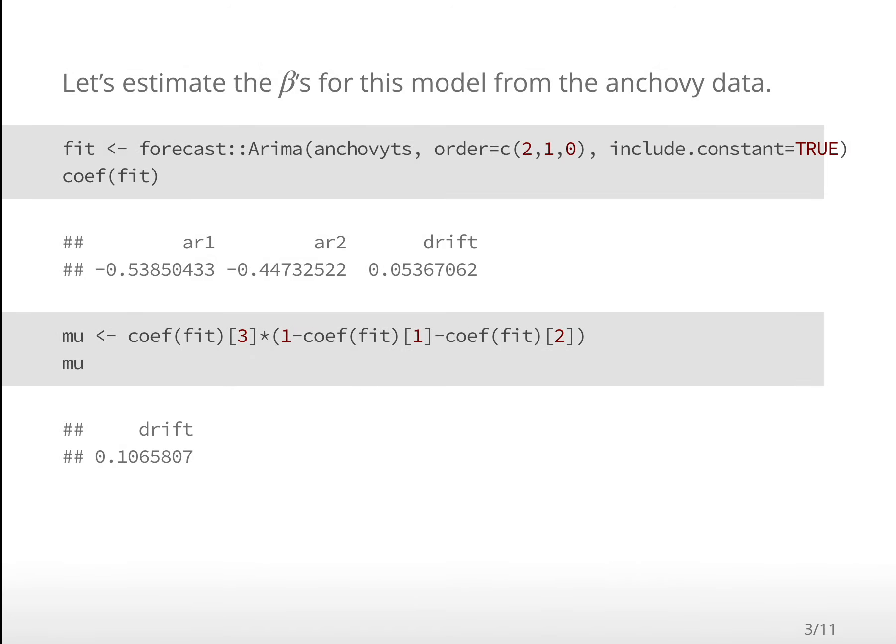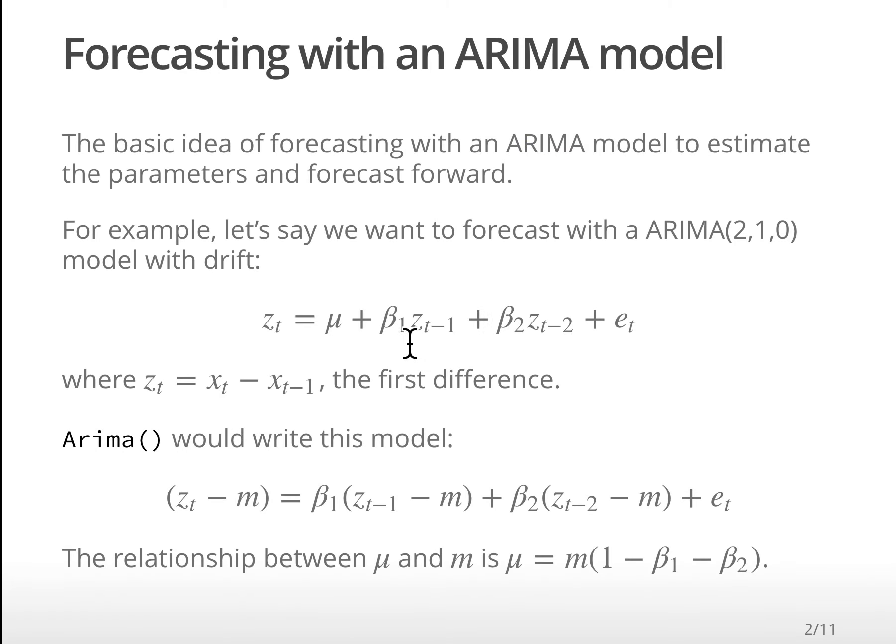Here we go. We're going to fit that ARIMA model, and this is how we do it. We tell it the order - this is the 2 for the AR part, one difference, and the MA part is 0. Then we're saying include a constant. It's using this structure and getting the parameters for that. This is the model it estimates: AR1, AR2, and the drift.